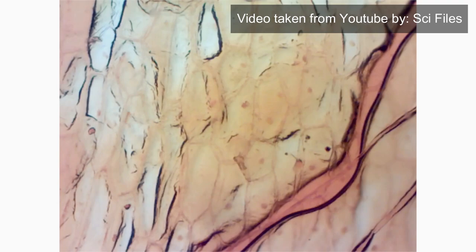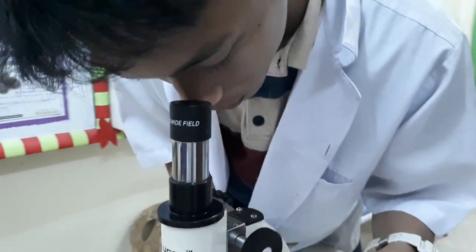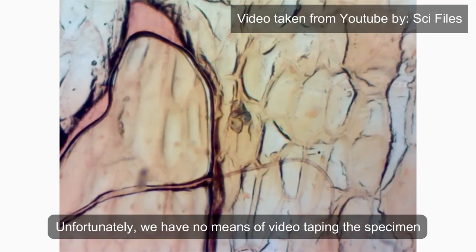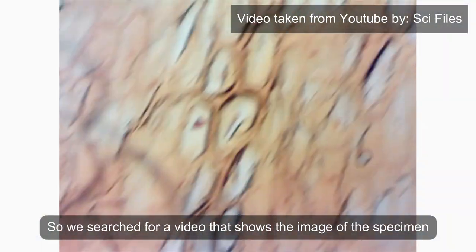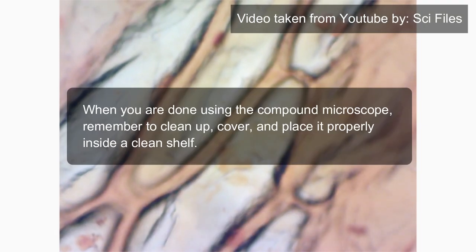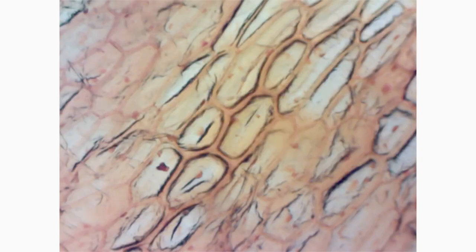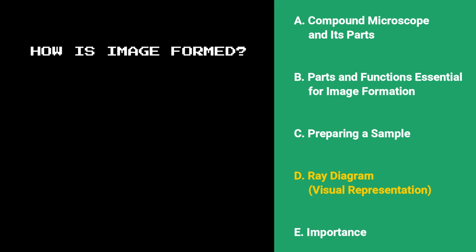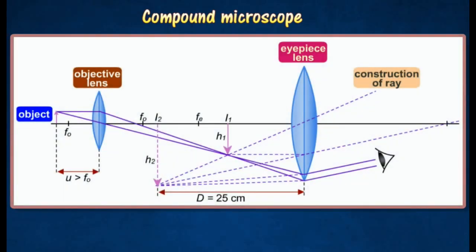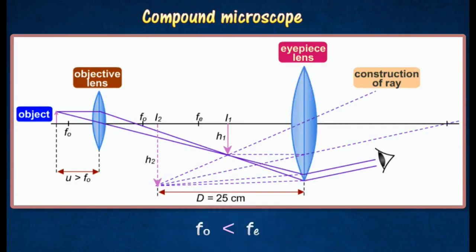Let's take a look. To further understand, here is a ray diagram of how the images in a microscope are formed. It is made up of two convex lenses of high power. The lens nearer the object is called the objective lens with focal length FO. The lens nearer the eye is called the eyepiece with focal length FE, where FO is less than FE.